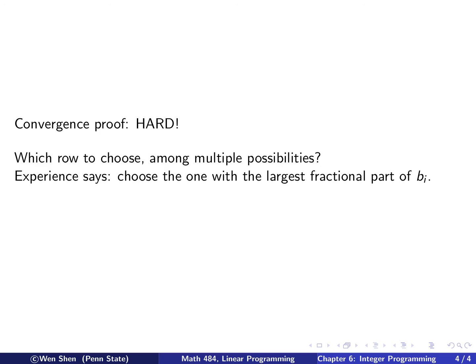A little bit of theoretical results, or the lack of it. The convergence of such an algorithm is really hard to prove, so we're not going to touch that. Then there's a question that remains. In cases, you could have multiple choices of rows to choose. As in our example, multiple bis are not integer. So which one do you pick? Experience says, we're not going to prove it, you can choose the one with the largest fractional part of bi. That gives you more correction and hopefully convergence faster, also from experience.